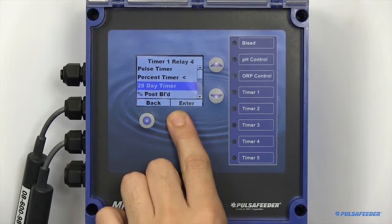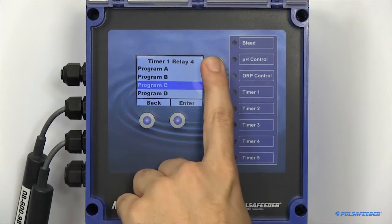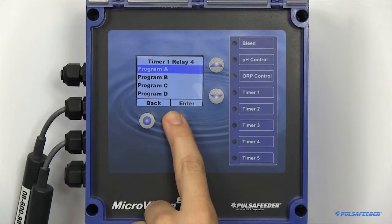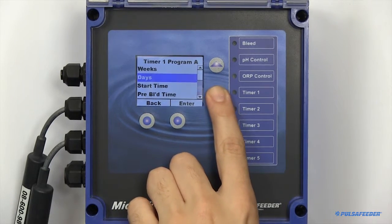A 28-day timer, or biocide, can have four programs running on each relay. To set up a single program of a biocide timer, you need to configure the weeks, days,